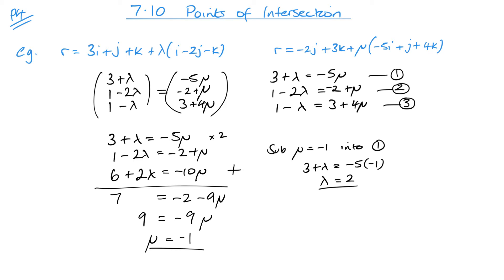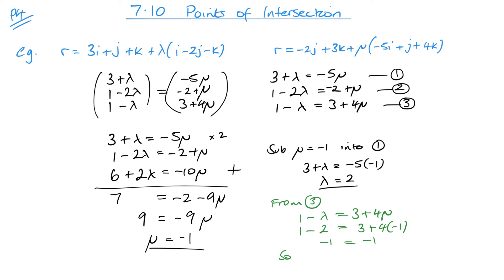Now we look at equation 3: 1 − λ = 3 + 4μ. Substituting our values, on the left we get 1 − 2 = −1, and on the right we get 3 + 4(−1) = 3 − 4 = −1. Both sides equal −1, so our lines intersect.